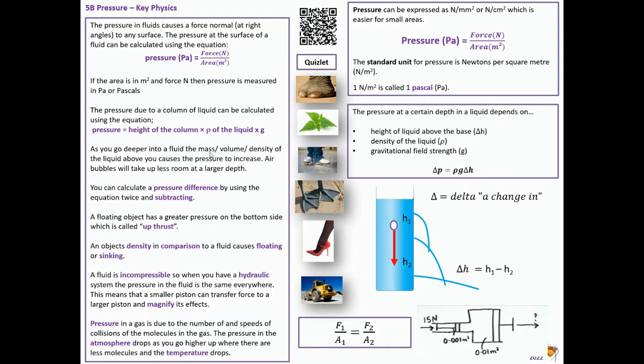If you go deeper into a fluid, the density of the liquid above you causes pressure to increase, and air bubbles will take up less room at a larger depth. You can calculate the pressure difference by using the equation twice and subtracting. If I'm at different heights, when I change my height, I've got to change the difference to see the change in pressure. Floating objects have greater pressure on the bottom side, which is called upthrust. An object's density in comparison to a fluid causes floating or sinking.